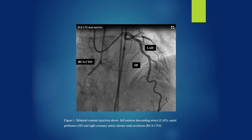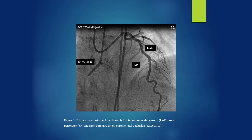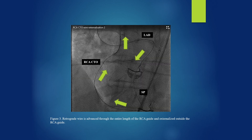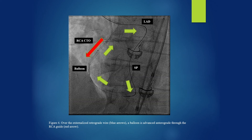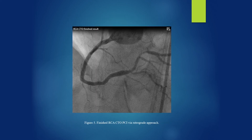This is an illustration of a right coronary artery CTO PCI performed through a retrograde approach. Here you see a left anterior descending artery, septal perforator, and occluded right coronary artery. By utilizing the septal perforator, we negotiate our wire to the distal segment of the right coronary artery and advance our wire and microcatheter toward the proximal segment. Then the wire is externalized, and additional angioplasty and stent placement is performed antegrade. This is the final result.